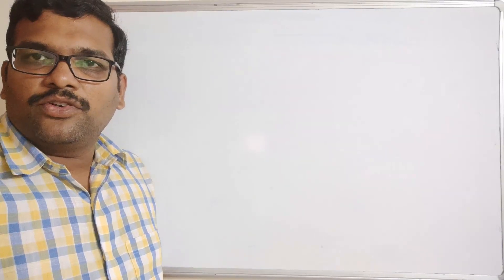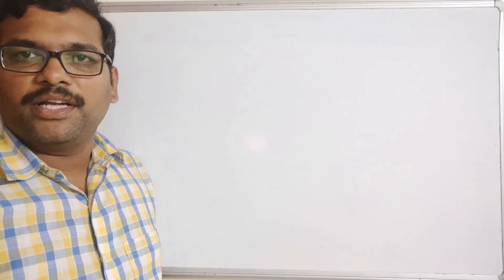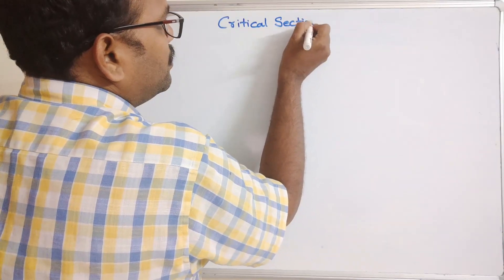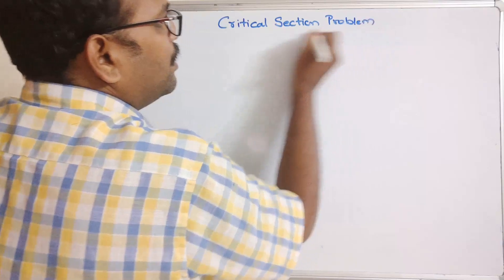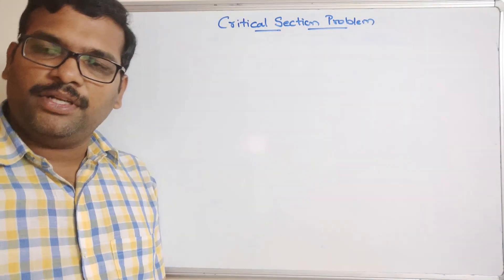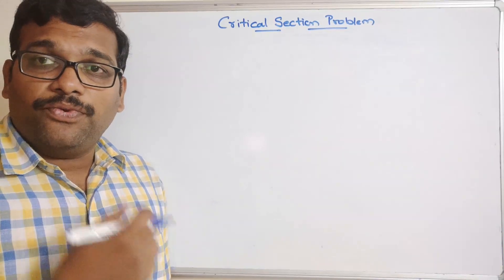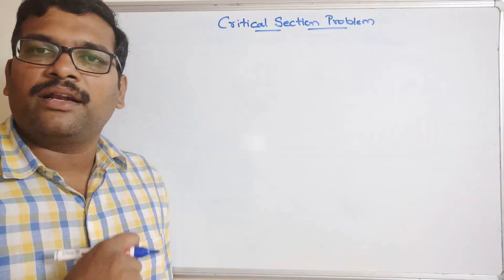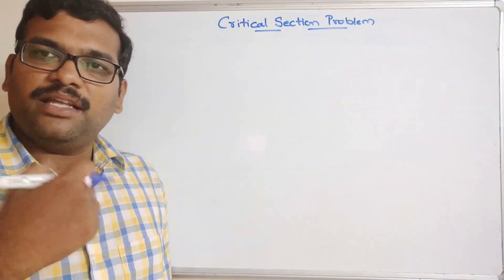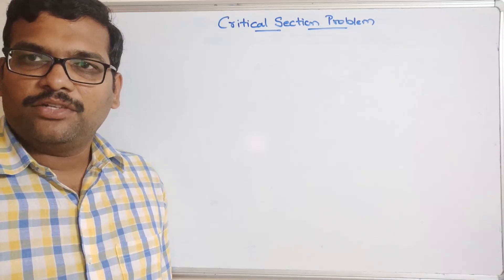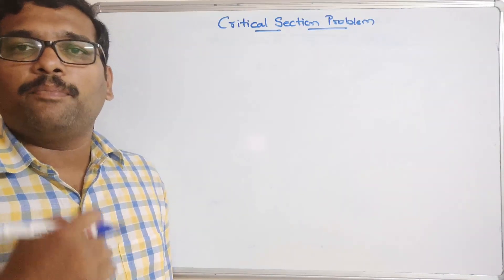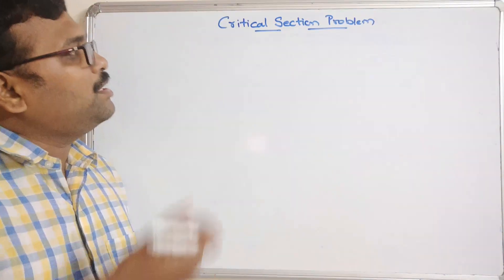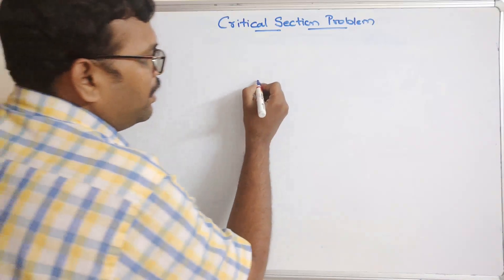Hello friends, welcome back to our channel. In today's session we'll discuss one more concept in operating systems: the critical section problem. In our previous session we discussed process synchronization and why we require it. If there are cooperative processes, they must be executed concurrently and share common resources and variables. In such cases there might be a race condition, causing data inconsistency. To avoid race conditions, one solution is the critical section problem.